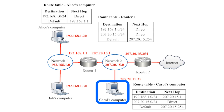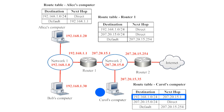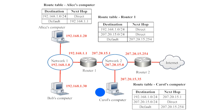Now let's trace a couple of routes from Carol's computer. If Carol wanted to send information to Bob's computer, then her route table would direct that information to router 1, and then the route table at router 1 would direct that information to Bob's computer. If Carol wanted to send information to an IP address on neither network 1 nor network 2, then her route table would default to sending that information to router 2, which would then run through its route table to direct that information to the next address in line.